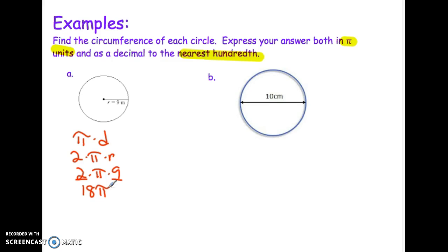If I ask you to write your answer in π units, this is what you will write: 18π. Because circumference is just a distance, you'll write it meters. In this case, it was labeled a meter, so 18π meters is our answer in π units.